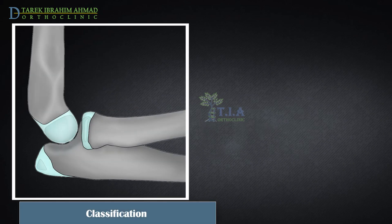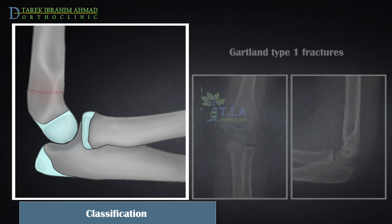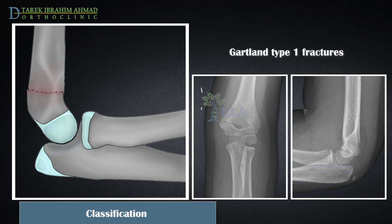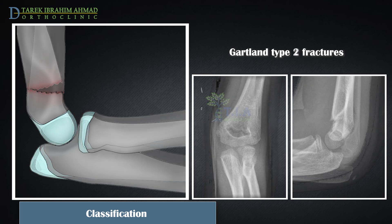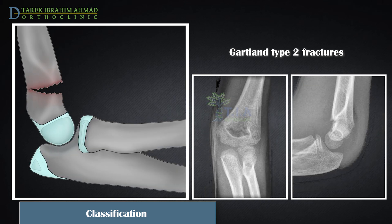Regarding supracondylar fracture classification: extension-type supracondylar fractures may be further classified using the Gartland classification system. Gartland Type 1 describes a non-displaced fracture with radiographic evidence of a posterior fat pad sign; the anterior humeral line transects the middle third of the capitellum.